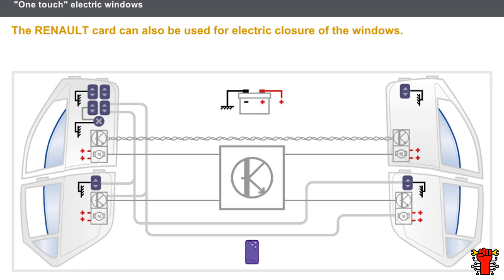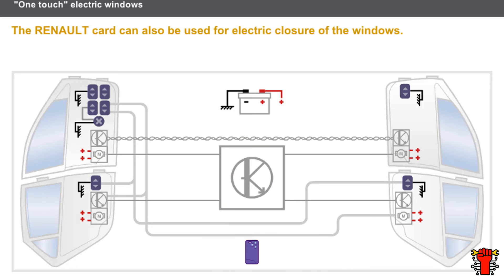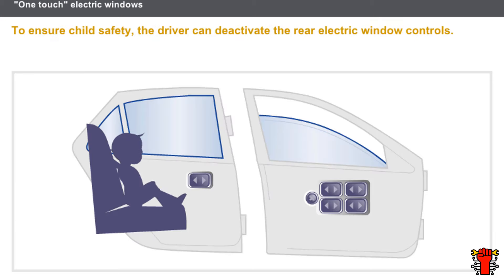On recent vehicles, the automatic closing function enables windows left open to be closed when the doors are locked. The driver uses the Renault card to close the windows. The card sends a signal to the UCH, which then orders the closure of the windows.